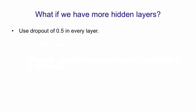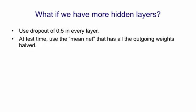If we have more than one hidden layer, we can simply use dropout of 0.5 in every layer. At test time, we halve the outgoing weights of all the hidden units, and that gives us what I call the mean net. So we use a net that has all of the units, but the weights are halved.